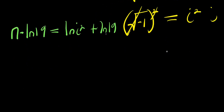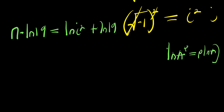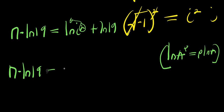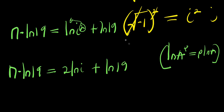Using the identity natural log of a to the power b equals b times natural log a, the natural log of i squared becomes 2 times natural log of i. So we have n times natural log of 19 equals 2 times natural log i plus natural log 19.